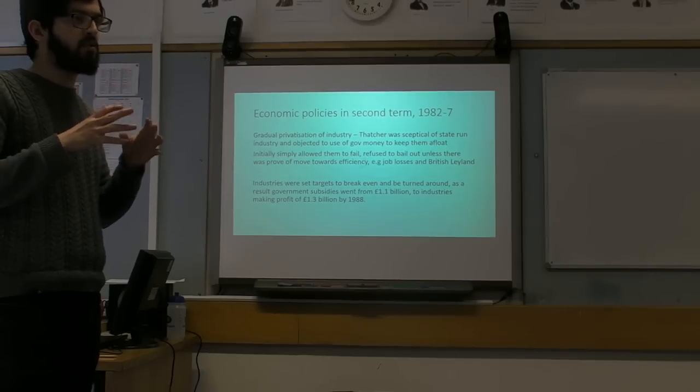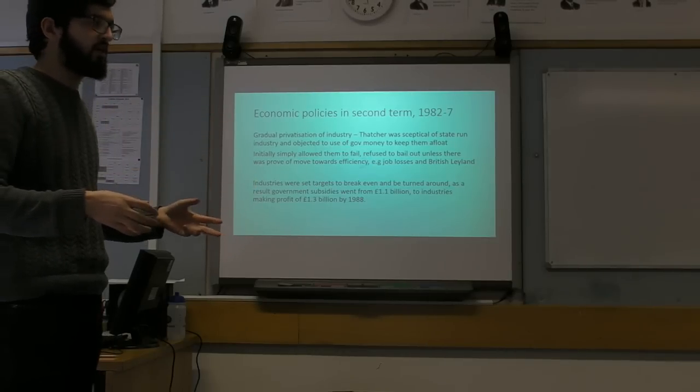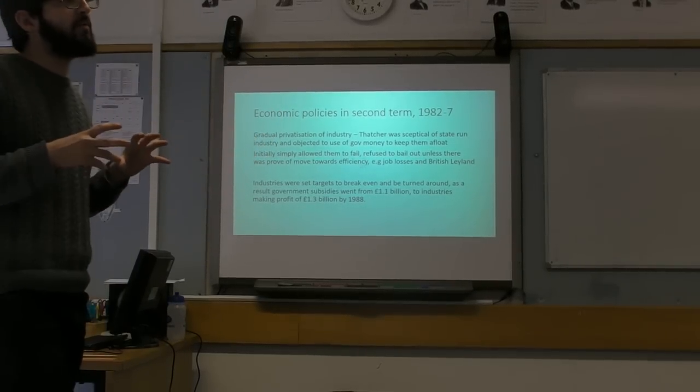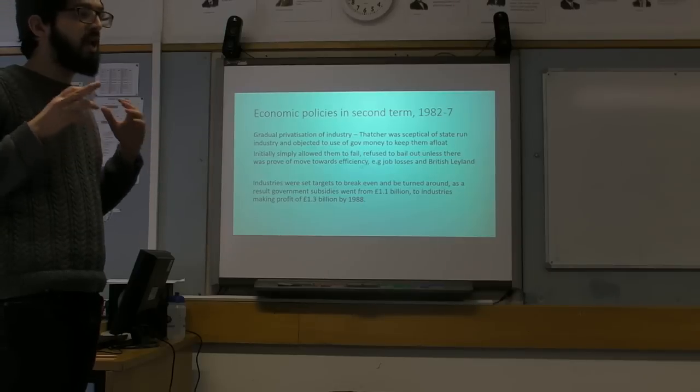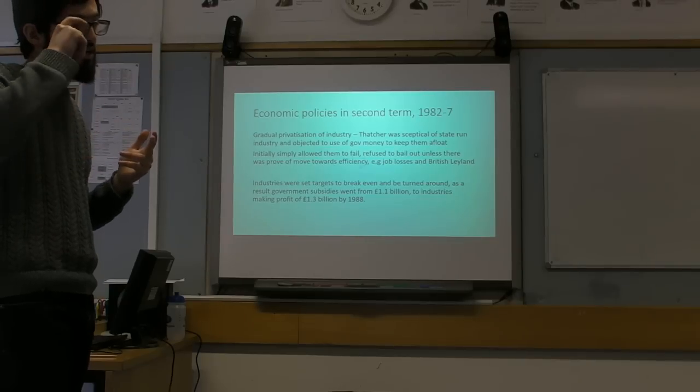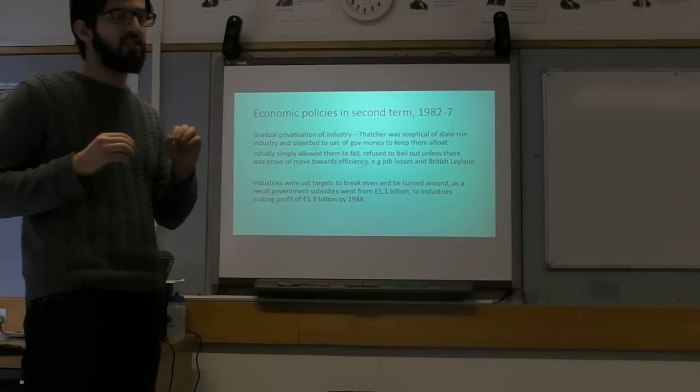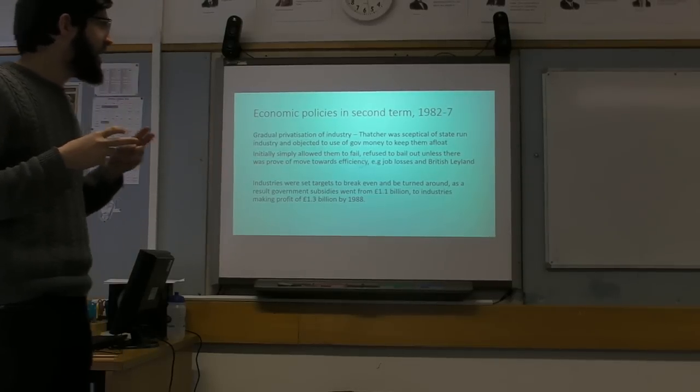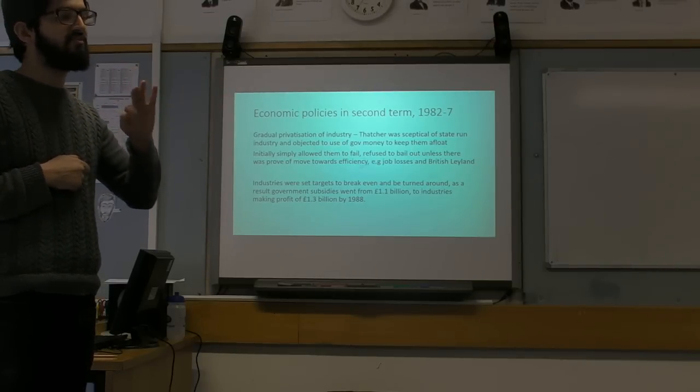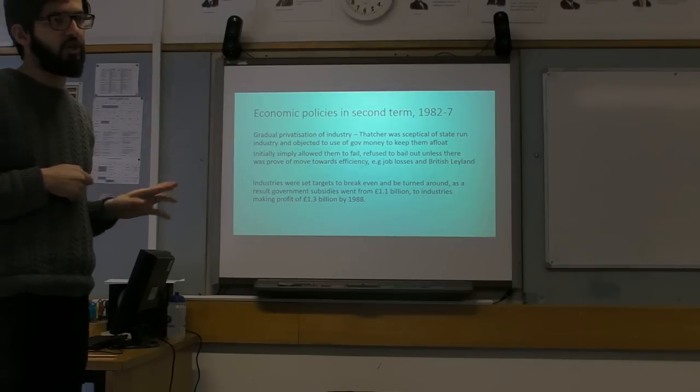Thatcher is completely opposed to the government having to subsidise the losses of really poorly run industries. Her first step is if the industry is bad and failing, we will let them fail. If the industry is failing, they should be trying to make efficiency savings. That means, basically, cut jobs. One of the ways she does this, she tries to force businesses to become more efficient by refusing to bail them out unless they could prove they were making steps to become more efficient.